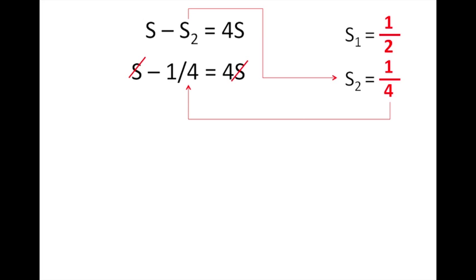We take an S away from both sides, so negative one fourth equals 3S. Divide by three on both sides to give us an S standing alone. Negative one twelfth is equal to S.